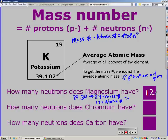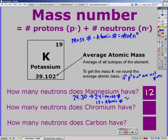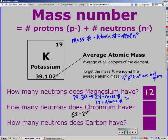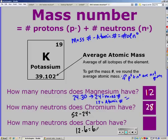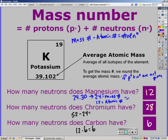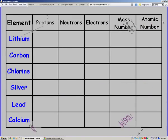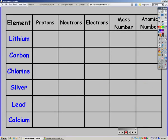Go ahead and pause the video and try the next two on your own. Restart when you have them. So chromium has a mass of 52, an atomic number of 24, giving us 28 neutrons. And finally carbon has a mass of 12, an atomic number of 6, giving us 6 neutrons. So pause the video and try filling out this chart on your own. Restart when you have the chart complete.